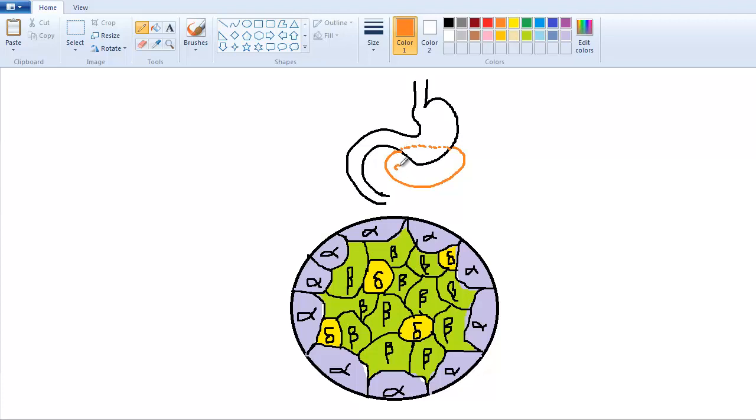And the pancreas is located just beneath the stomach, and the stomach overlaps it just a little bit. In the pancreas, you're going to find these little circular areas right here. So I'm going to zoom in on one of them, and I drew a little enlargement beforehand so you can see what it looks like. This area here is called the islet, islet meaning island, because when you look at it under a microscope, it looks like an island. The islet of some dude named Langerhans.